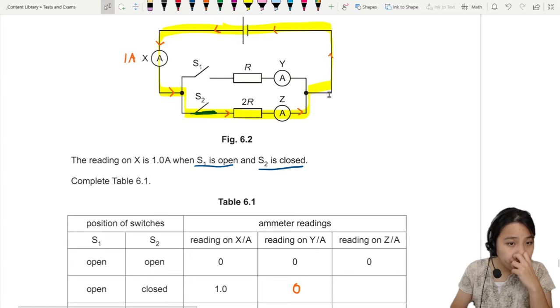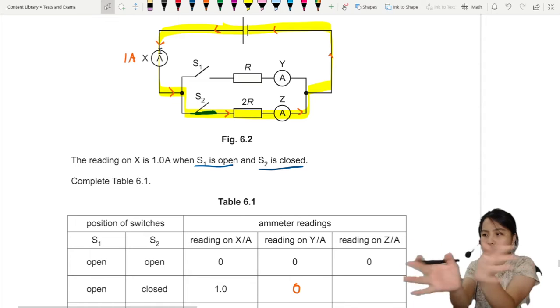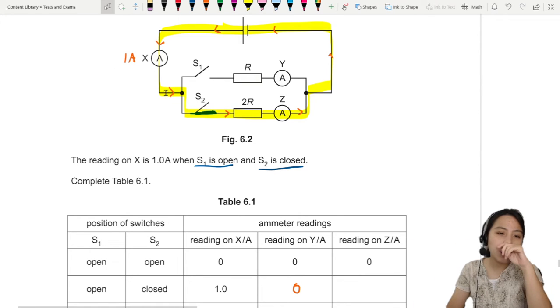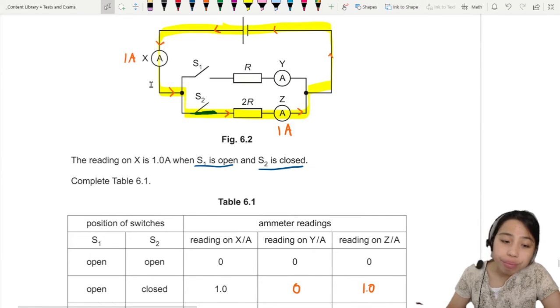Reading on Z. So the current didn't split up anywhere. There's no junctions. So if it's 1A here, the same amount, 1A will also be flowing through this. So let's go with 1. That's how we can think of current.